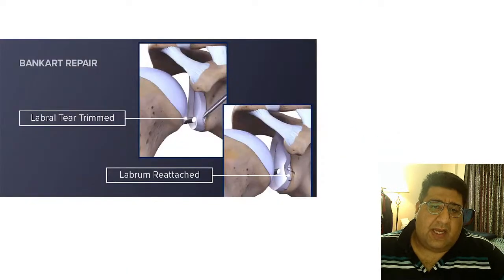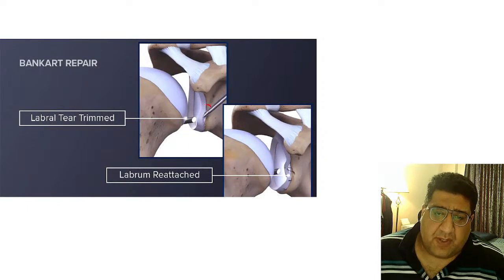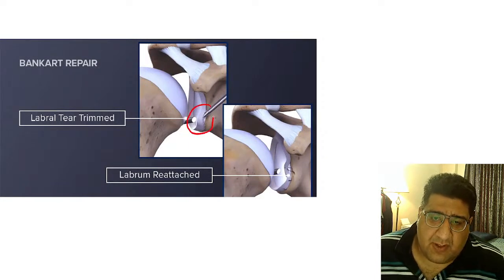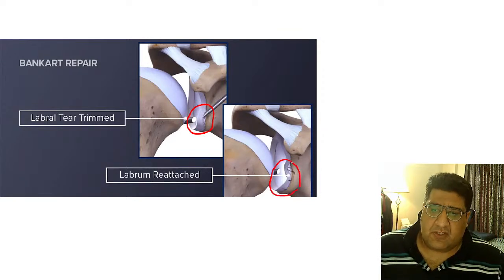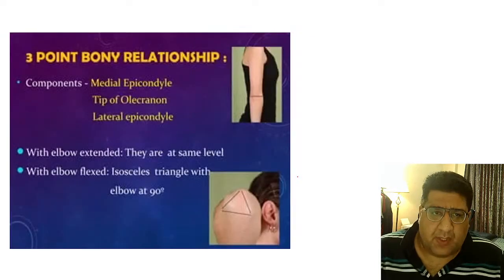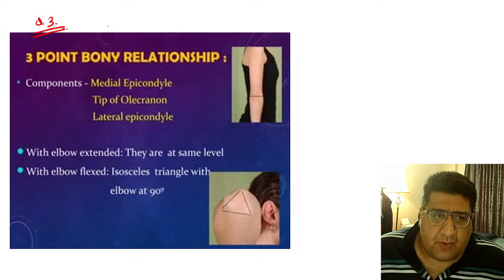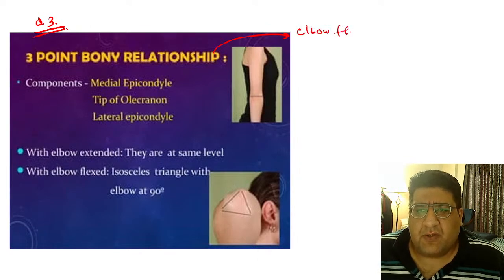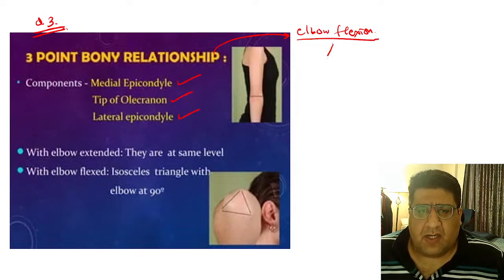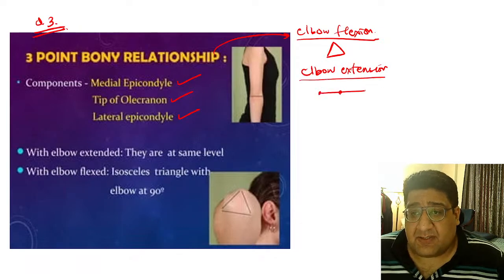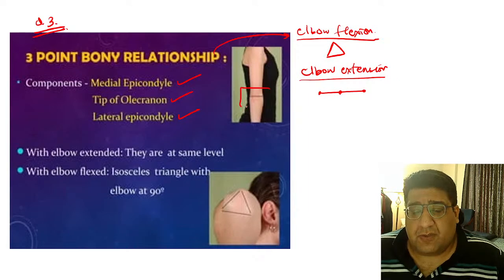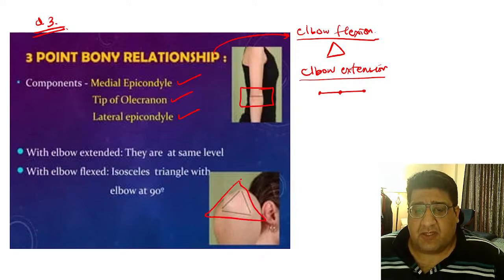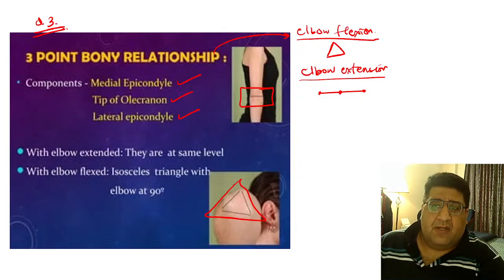I have shown you the arthroscopic Bankart repair — the labral flap which has been avulsed will be repositioned and fixed with suture anchors. The third question was on the three bony point relationship. Remember: if your elbow is in flexion, the three bony points — olecranon, lateral epicondyle, medial epicondyle — will make a triangle. If your elbow is in extension, these three bony points come in one single straight line.